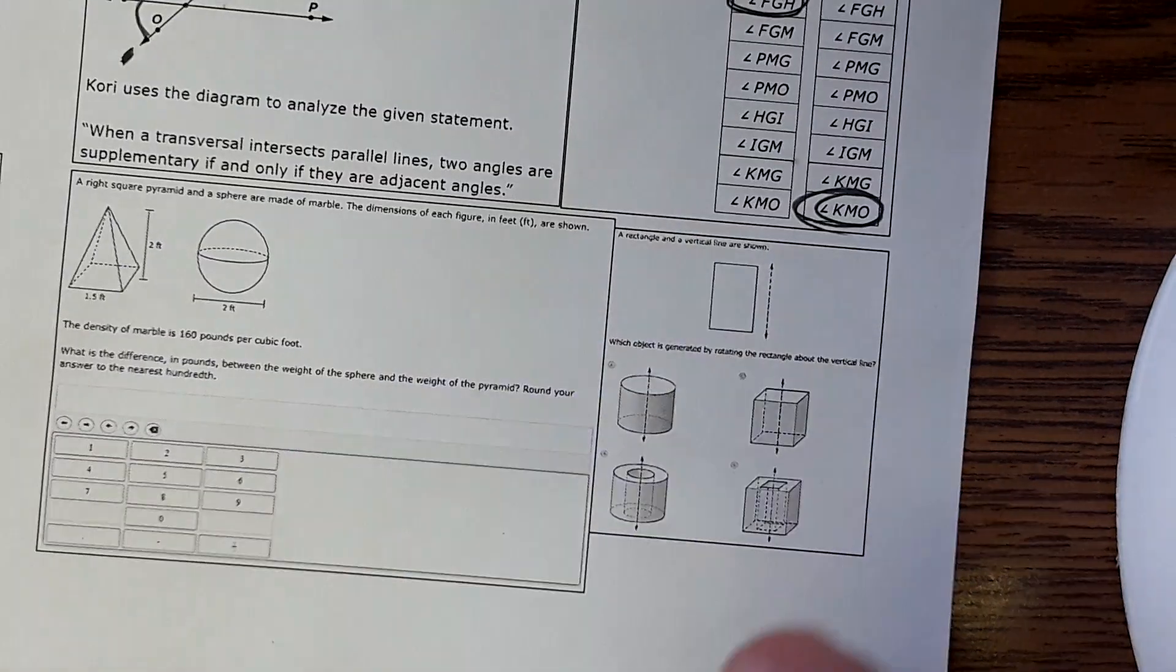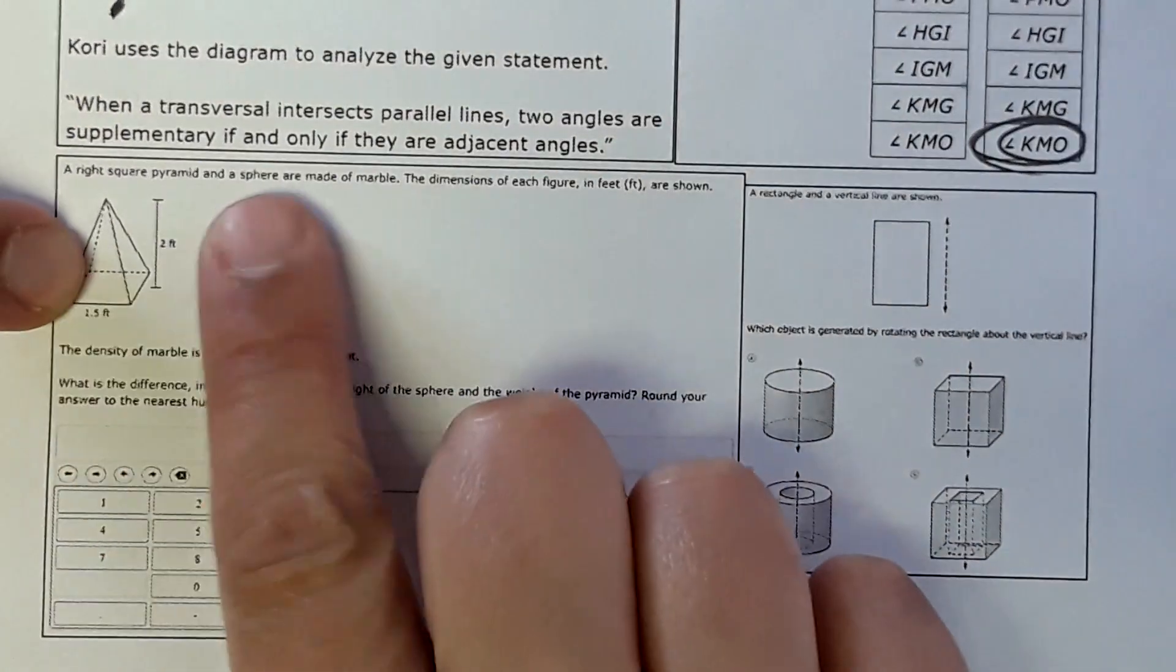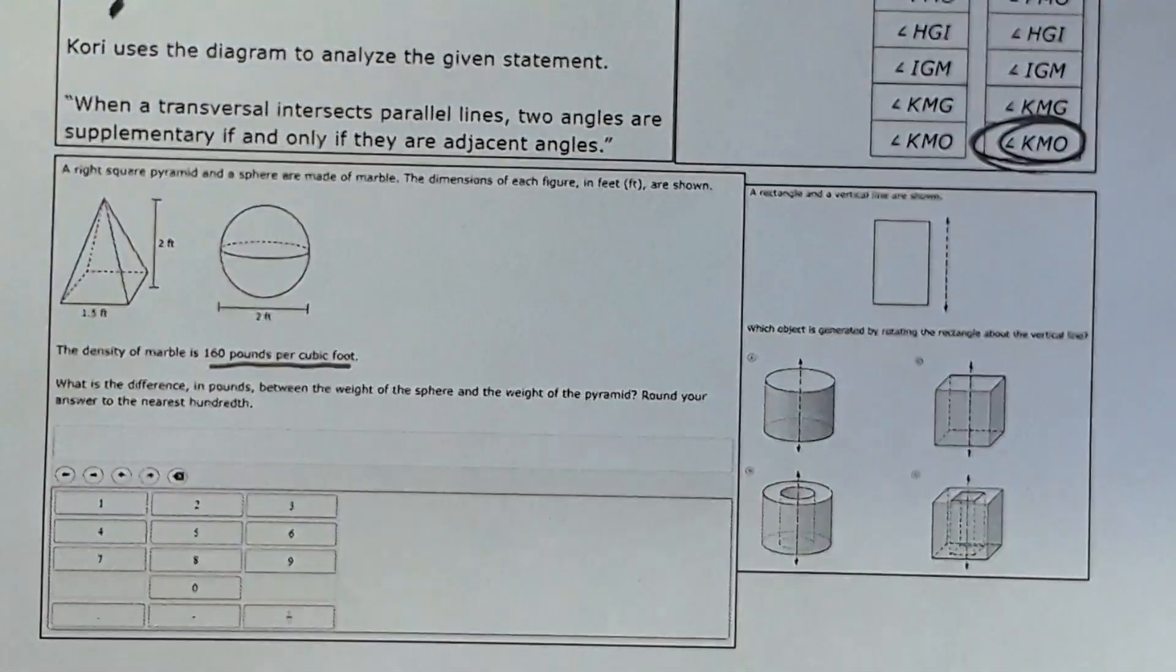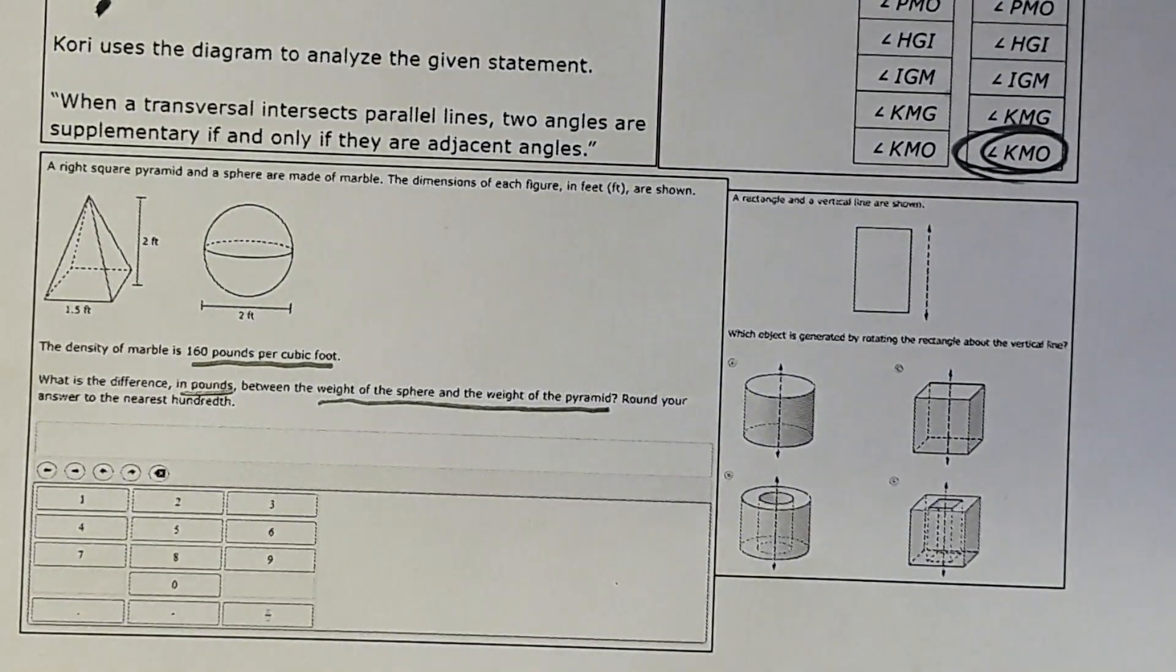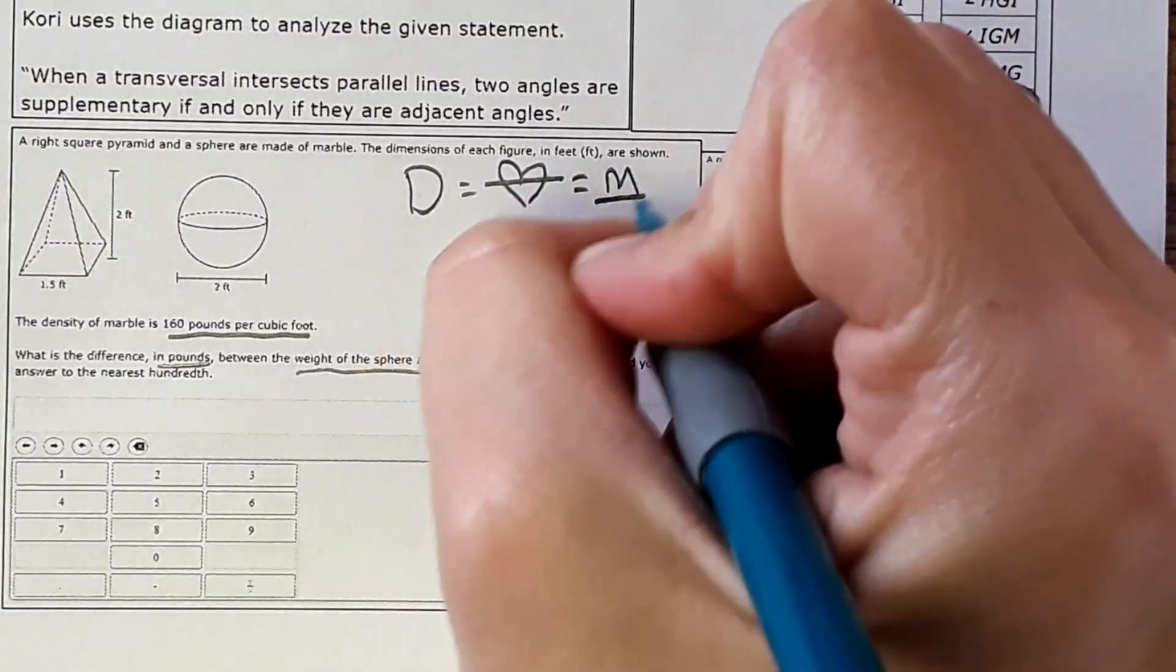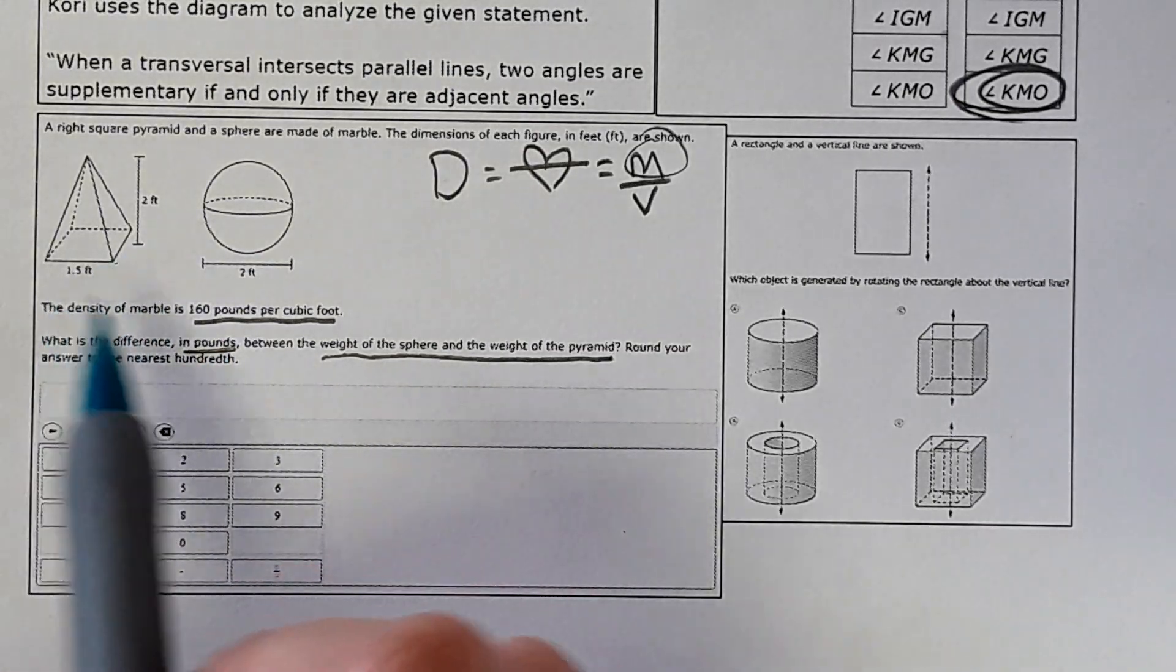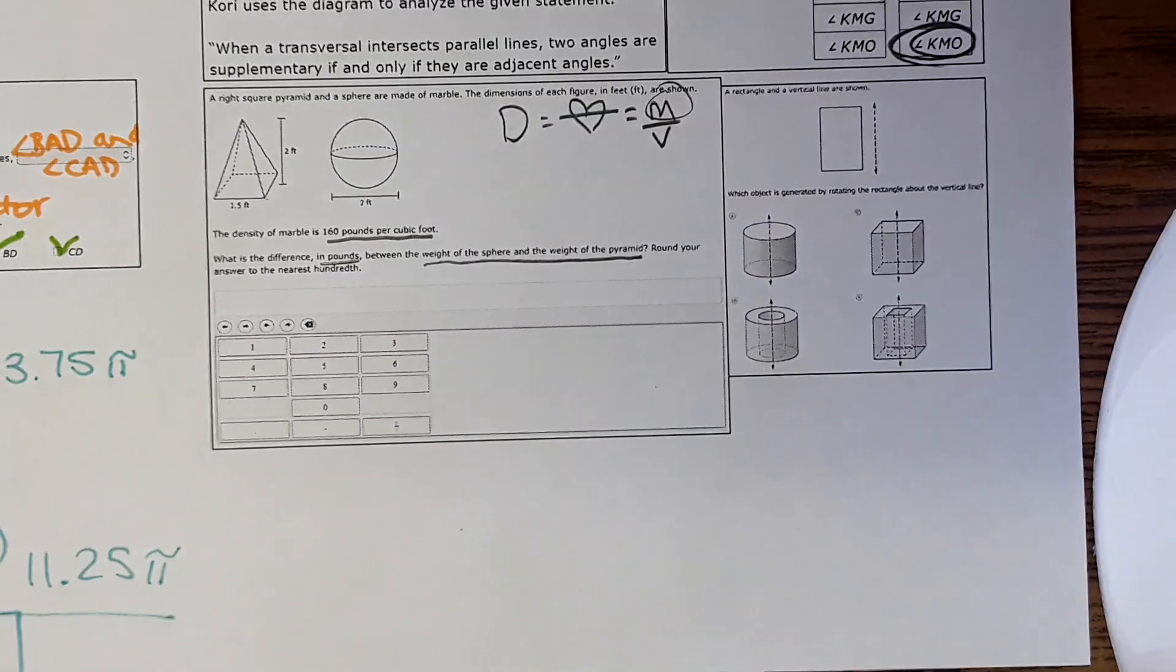Okay, two more, one's kind of long, one's kind of short. It says a right square pyramid right here and a sphere are made of marble. The dimensions of each figure in feet are shown. The density of the marble is 160 pounds per cubic feet. What is the difference in pounds between the weight of the sphere and the weight of the pyramid? Like we saw before, density equals mass over volume. It wants to know the difference in weight. We're given or we could calculate volume, and we're given density. So once we find the volume, we're going to use the density to find the weight and then find the difference between the two weights. Yes, it is high level, you can do it.